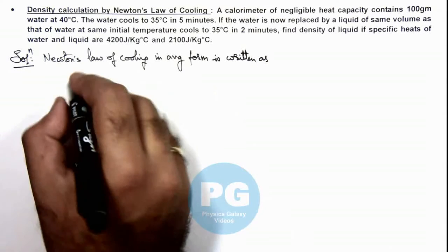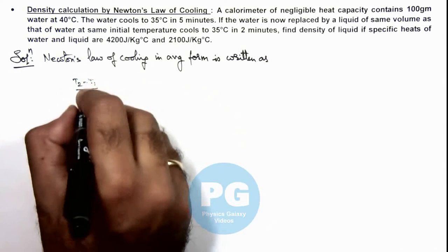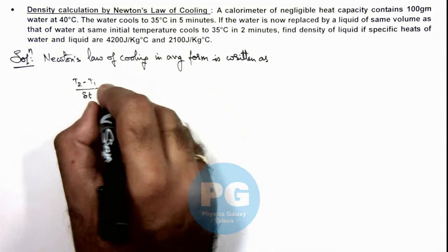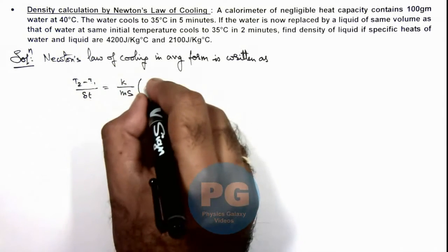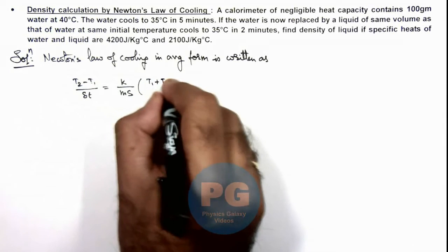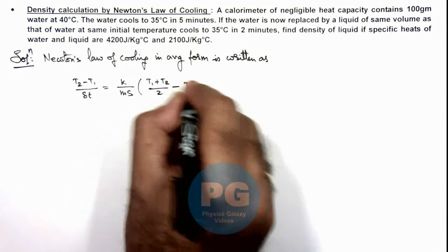This we write: T2 minus T1 by delta t is equal to k upon ms, multiplied by T1 plus T2 by 2, minus T surrounding.